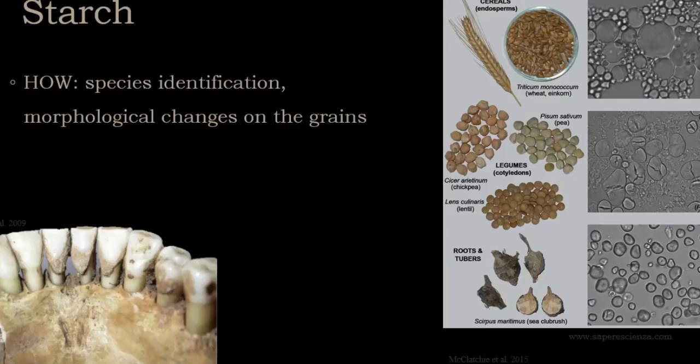Many plant species have starch in many different tissues, but the richest plant parts are, as expected, grains, seeds, tubers, and roots.